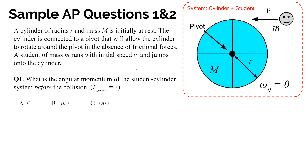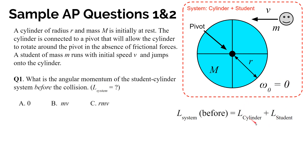Let's think about the student-jumping-on-a-merry-go-round situation further and consider some questions. A cylinder, or merry-go-round, of radius R and mass M is initially at rest. It's connected to a pivot allowing it to rotate in the absence of frictional forces. A student of mass M runs with initial speed V and jumps onto the cylinder. We define the system as both the cylinder and the student together. The first question: what is the angular momentum of the student-cylinder system before the collision? The cylinder has no angular momentum initially since it has no angular velocity, so that term goes away.